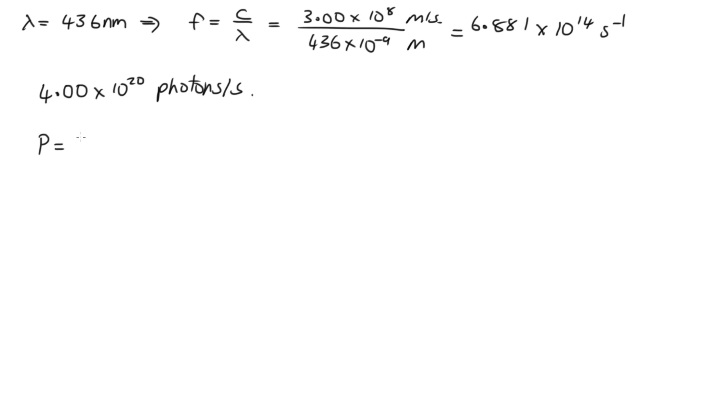So power is equal to the energy over the time. Now the energy will be equal to the number of photons times the energy per photon, and then we divide by time. So we've got the number of photons over time, that's 4.00 times 10 to the 20. So what we need to calculate is the energy per photon.